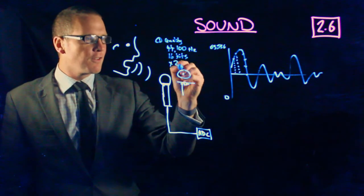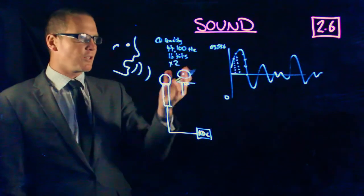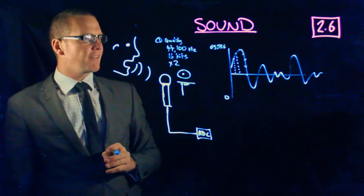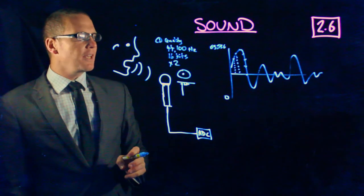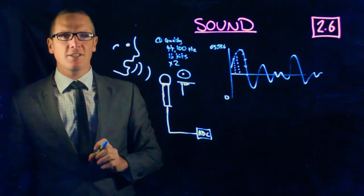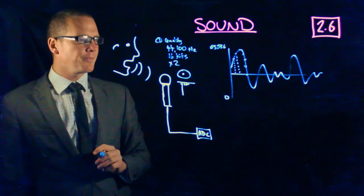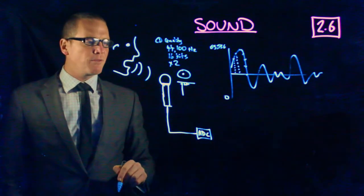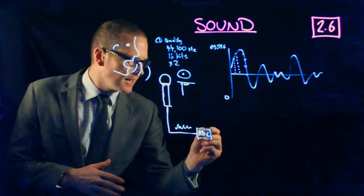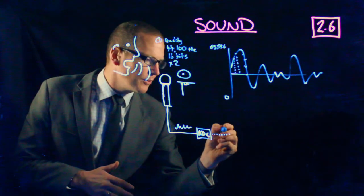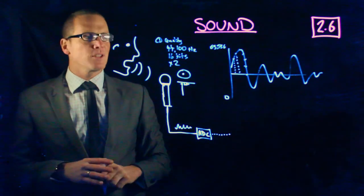You do that 44,100 times every second, and you do that for two channels because CD audio is in stereo. That's a lot of ones and zeros—about one and a half million for just a second of CD audio. Your analog to digital converter is taking that analog signal and creating this binary signal out the other end.